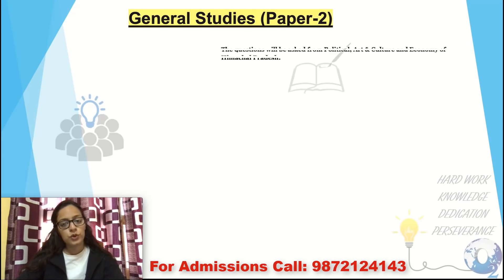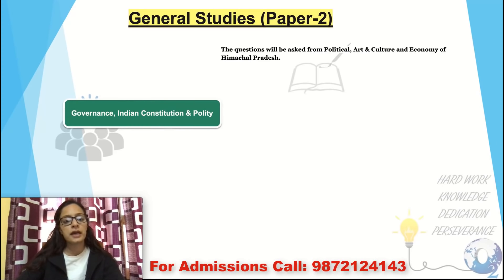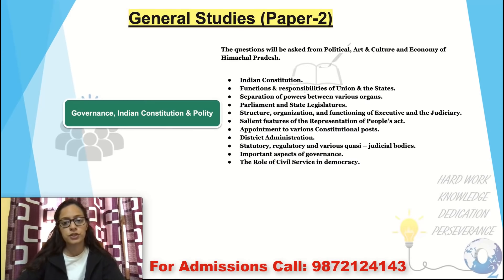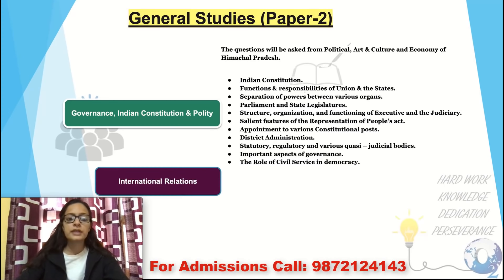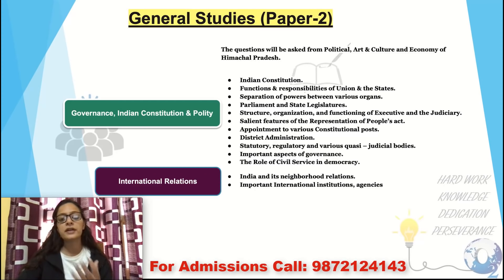GS Paper 2 covers Polity, Art and Culture, and Economy. The first section is Governance — Indian Constitution and Polity. The second section covers International Relations — India's relationships with neighboring countries, signed documents, trade, and important international agencies.